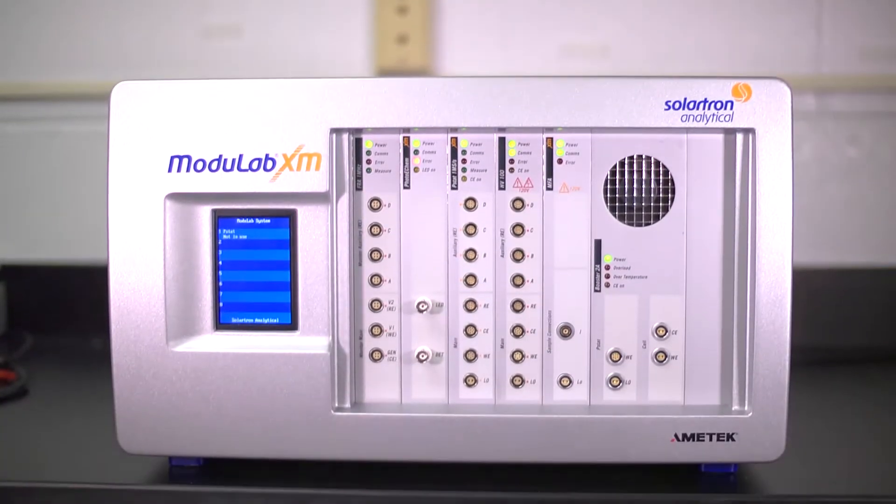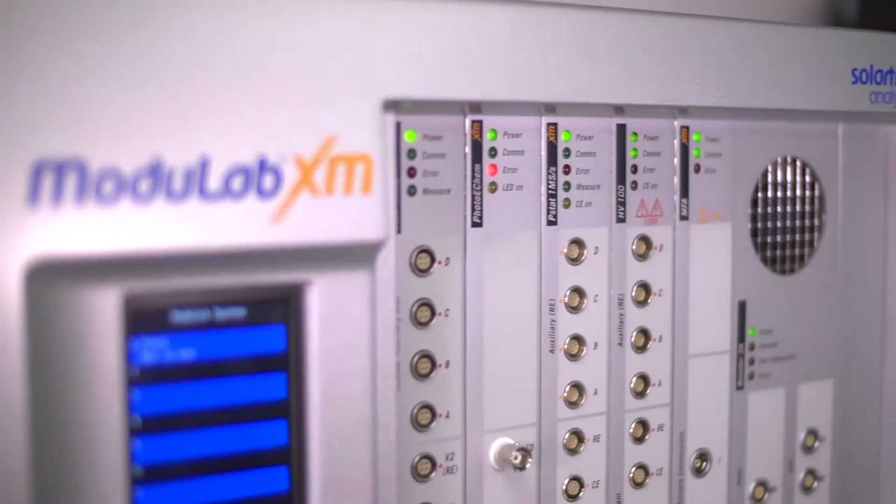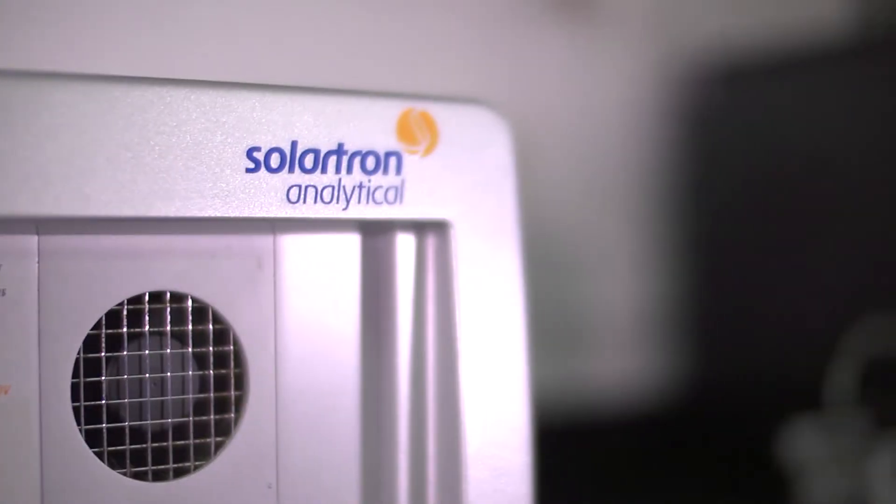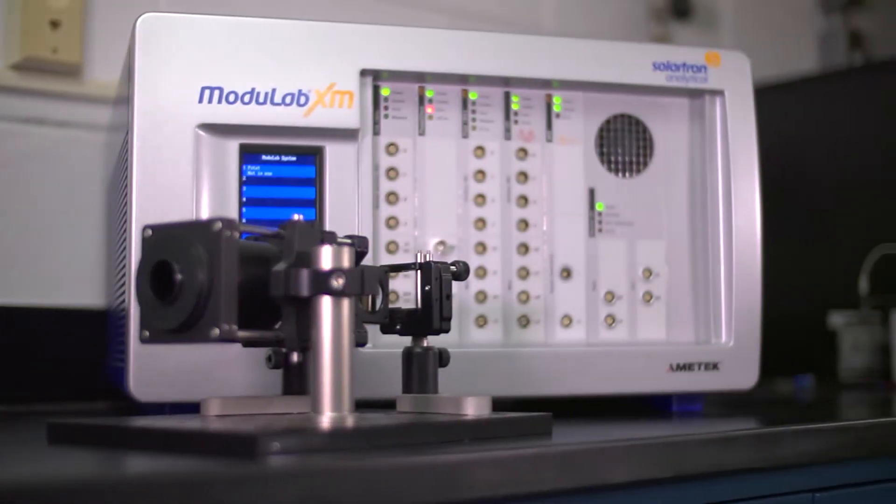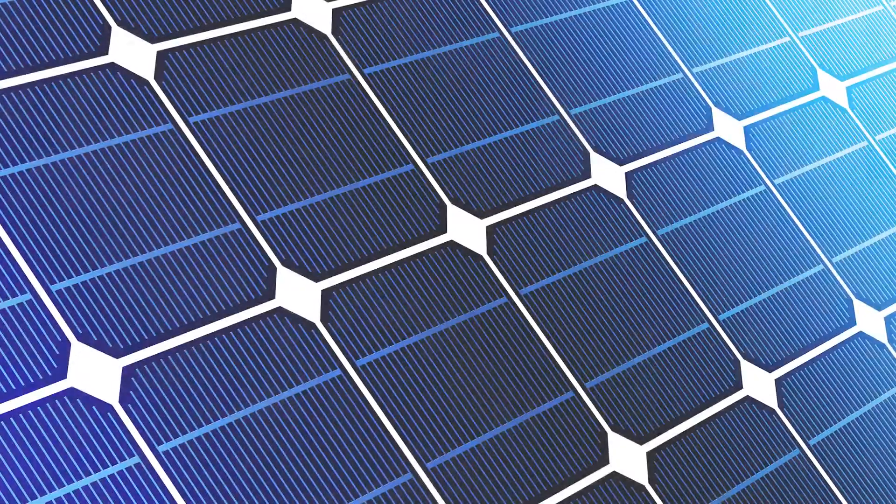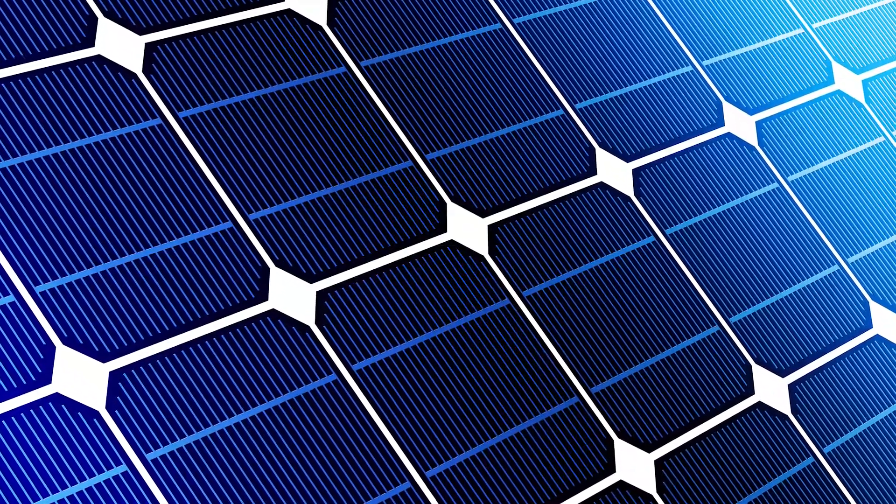Created through an exclusive partnership with Professor Laurie Peter of Bath University, the Modulab XM Photo eChem system is a fully integrated photo electrochemical measurement system designed for the characterization of dye-sensitized solar cells.